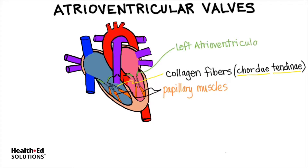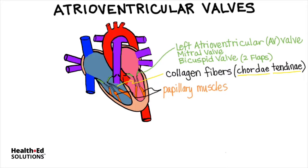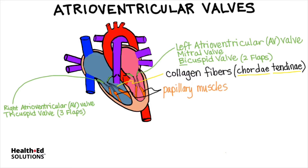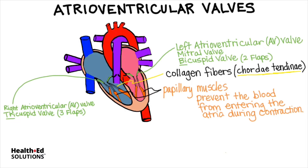The left atrioventricular valve has two other names. One is the mitral valve, named historically for how it looked like the hat that a bishop would wear. Another name is the bicuspid valve, named for its two flaps — bi for two. The right atrioventricular valve is called the tricuspid valve, with tri for its three flaps. The cordae tendinae allow the papillary muscles to hold the AV valve shut, preventing blood from entering the atria when the ventricles are contracting, thereby preventing backflow of blood.